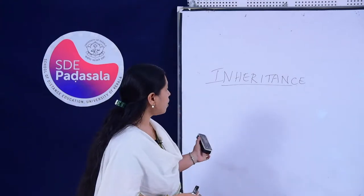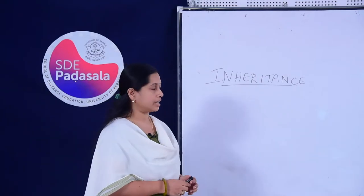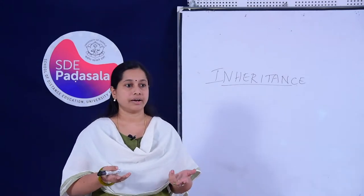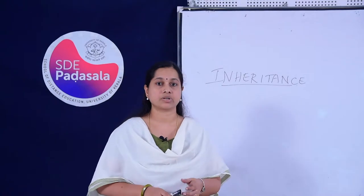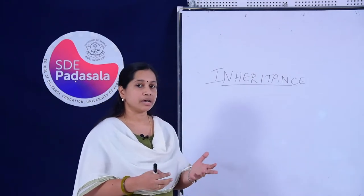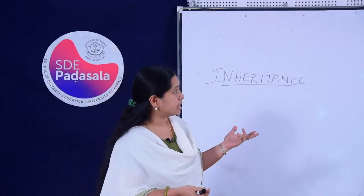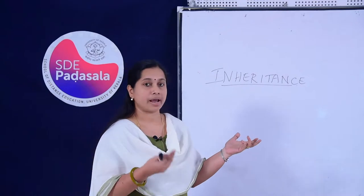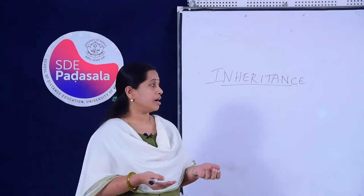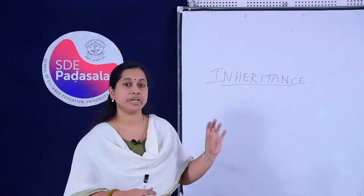Inheritance is an important object-oriented programming concept. Before going into the details, first we will see what the term 'inherit' means. Inherit is a term we often use in our day-to-day life. If we see a tall boy, we might say he has inherited his quality from his father, or if he has brown hair, he might have inherited that quality from his mother. So inheritance is nothing but deriving or getting something from ancestors or parents. The dictionary meaning also states it is receiving or deriving quality from your parents or ancestors. We also talk about inherited diseases — for example, asthma. If parents have it, the child is also likely to have that particular disease.